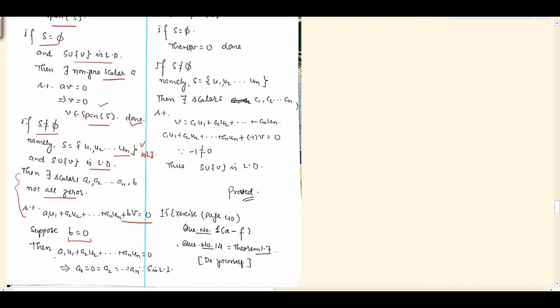If this expression, this linear combination is zero, it means that U1, U2, and so on UN are LI. So these coefficients have to be zero. All these coefficients will be zero because S is LI. In this case, if B is zero, then all coefficients are also zero.